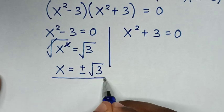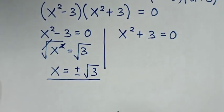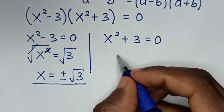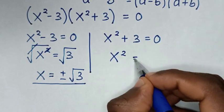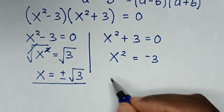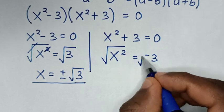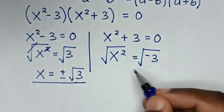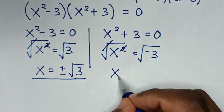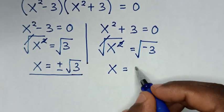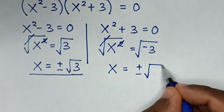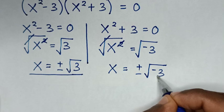So we have two solutions of x: x is equal to plus or minus square root of 3. Then from the second solution, we take 3 to the right side, so x squared is equal to negative 3. We apply square root on both sides, giving x is equal to plus or minus square root of negative 3.